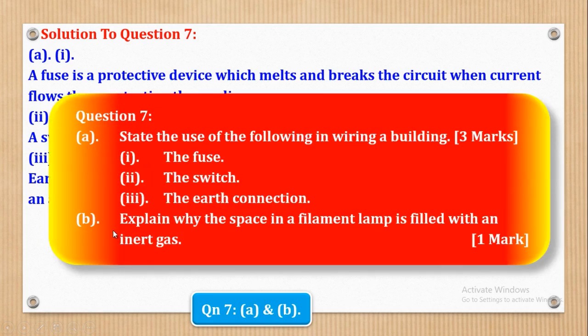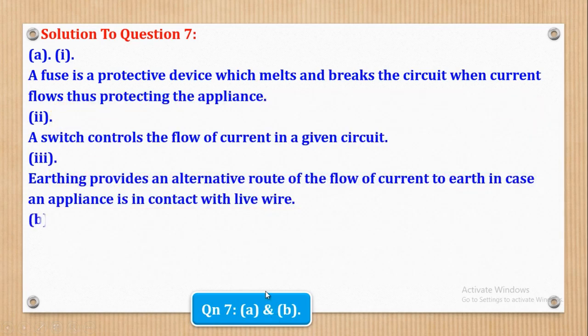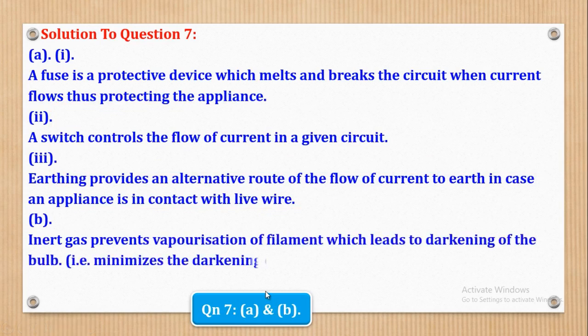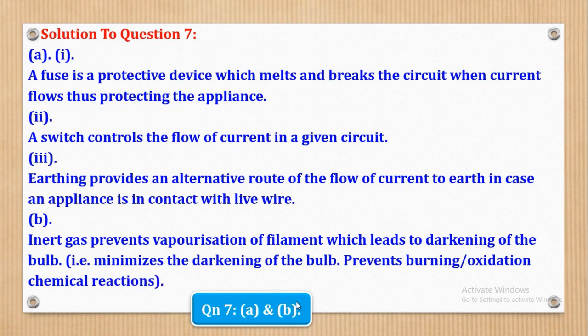Now we shall go to Part B. Part B, we shall say that explain why the space in a filament is filled with an inert gas. So we shall say that the inert gas prevents vaporization of filament which leads to darkening of the bulb. So that is the reason why we fill it with inert gas.